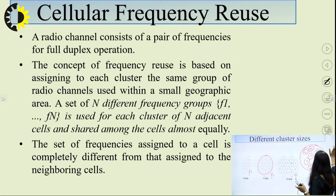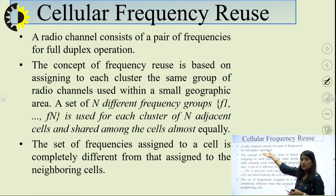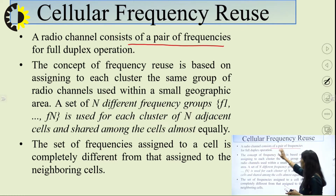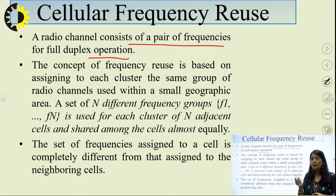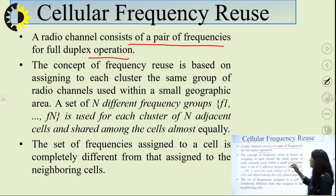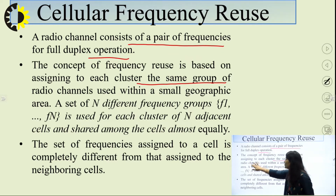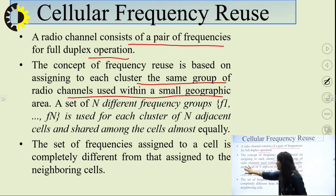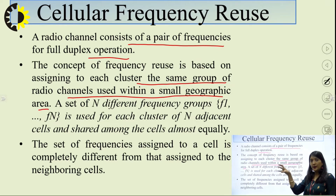The radio channel consists of a pair of frequencies for full-duplex operation. Full duplex means two different channels — one for transmission and one for reception — whereas in simplex, only one channel is used for either transmission or reception. The concept of frequency reuse is based on assigning each cluster the same group of radio channels within a small geographical area, repeated by multiple clusters at the same time.